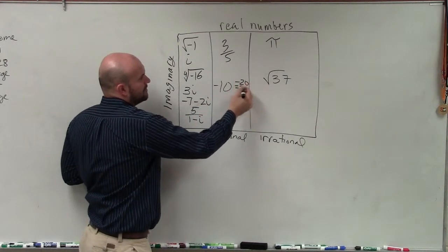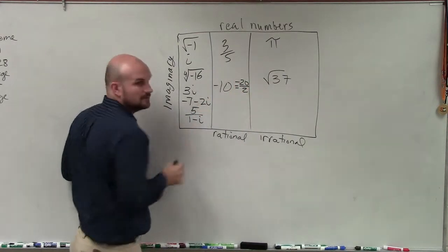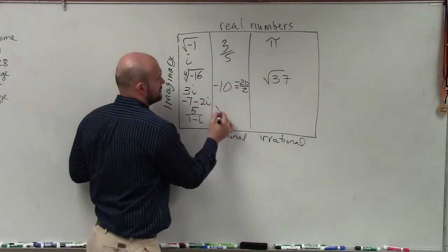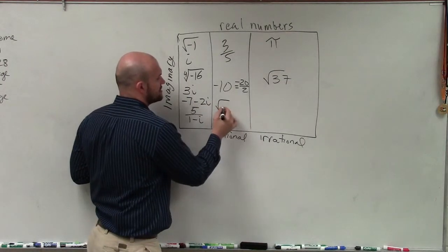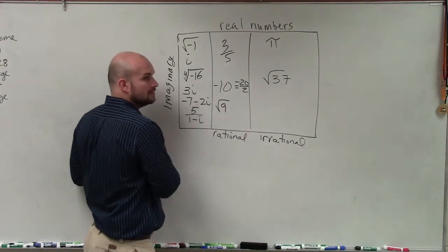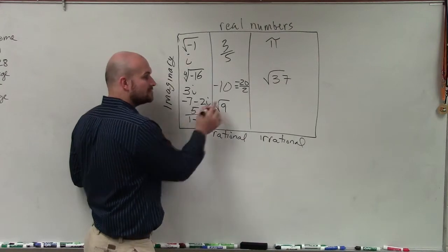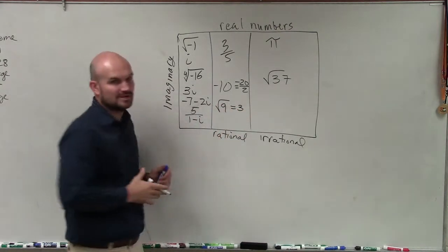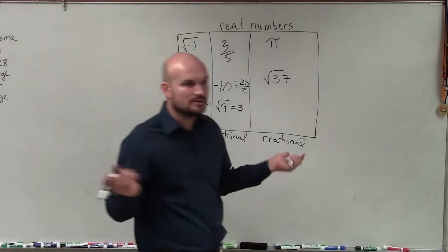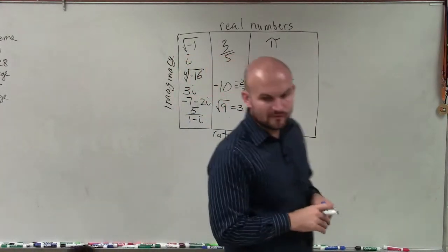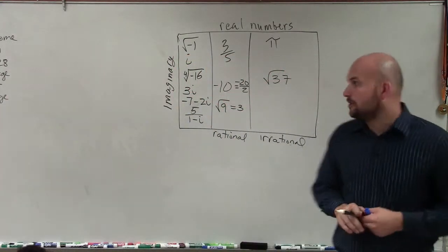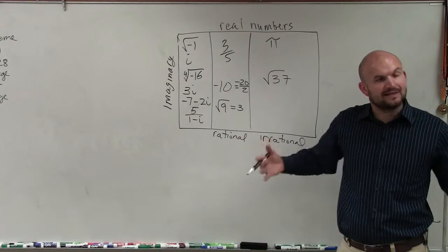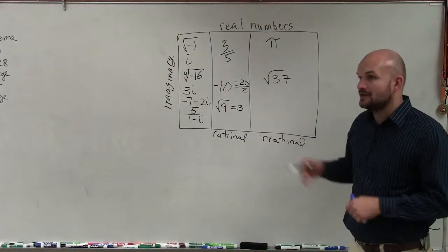What about negative 20 over 2? What about the square root of 9? The square root of 9 is 3, and you can represent 3 as a fraction — 12 divided by 4, or 12 over 4. So all of these are examples of rational numbers. Anything, as long as you can represent it as a fraction.